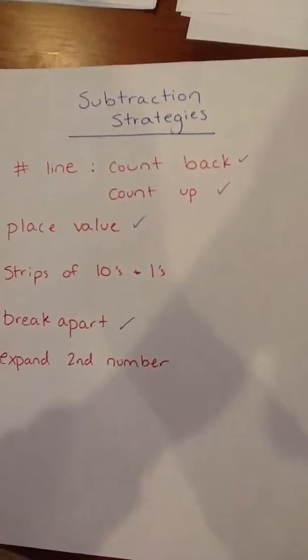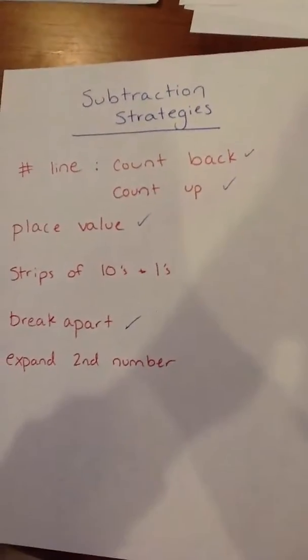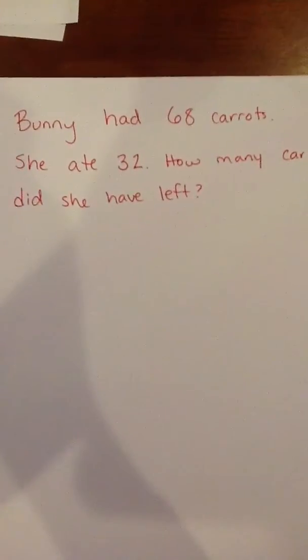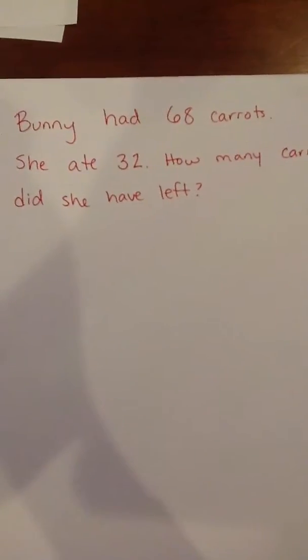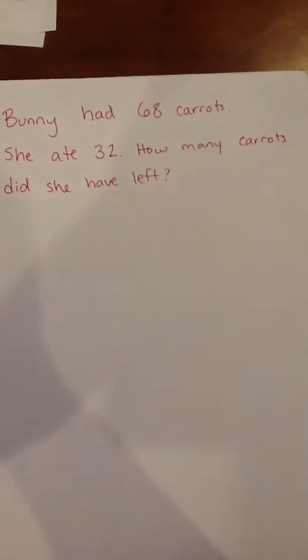In our next second grade subtraction strategy, we're going to look at strips of tens and ones. Bunny had 68 carrots. She ate 32. How many carrots does she have left?